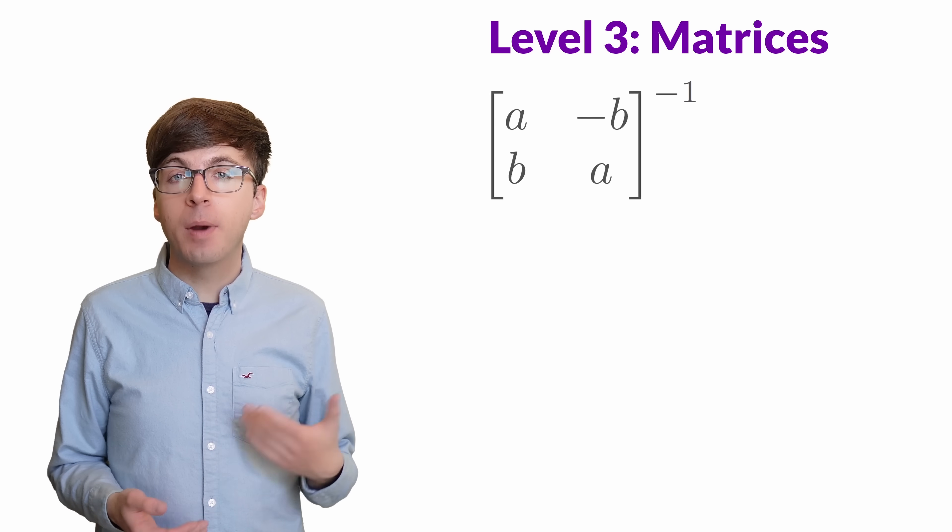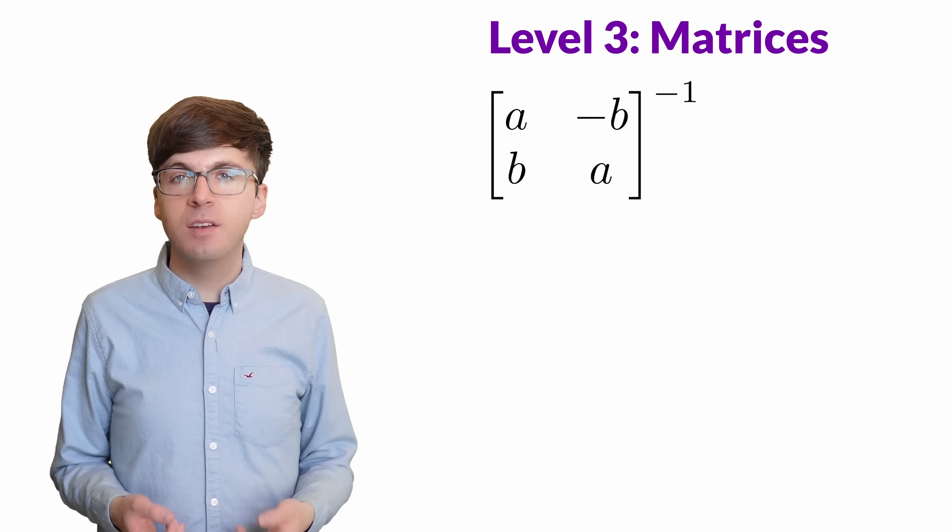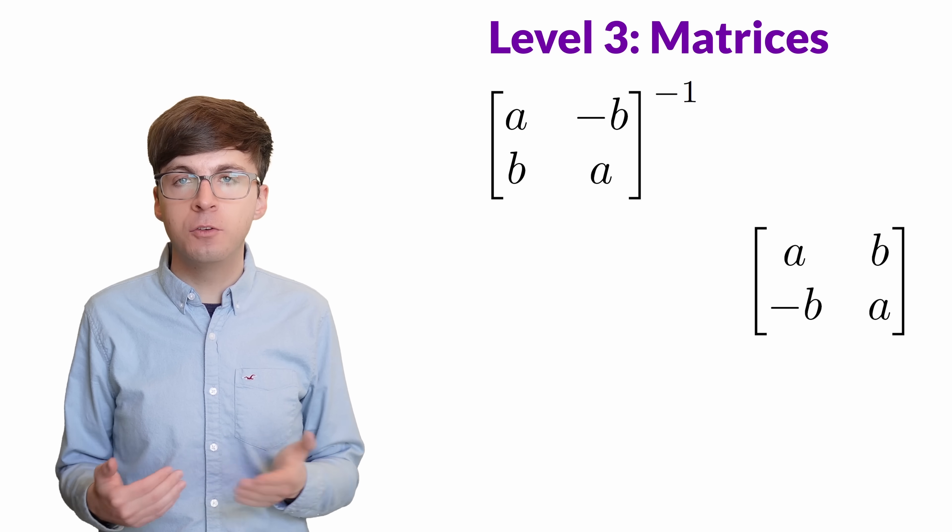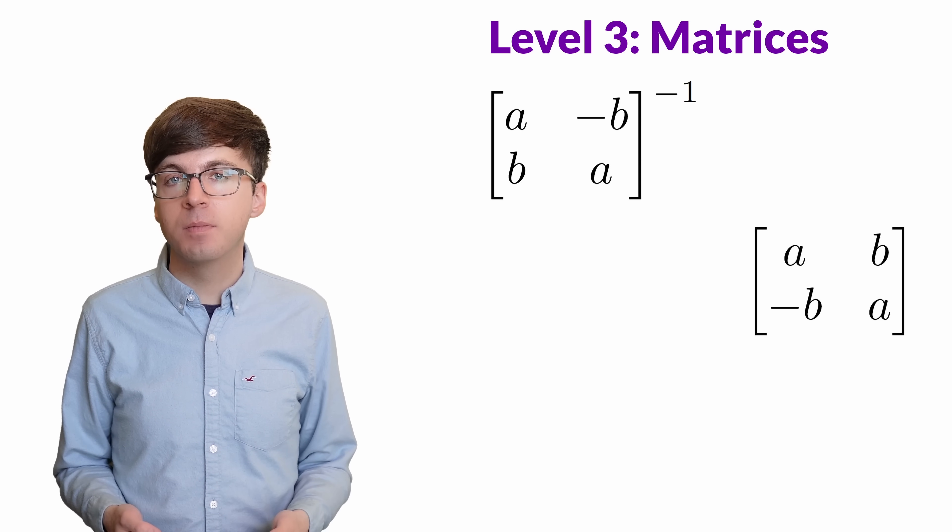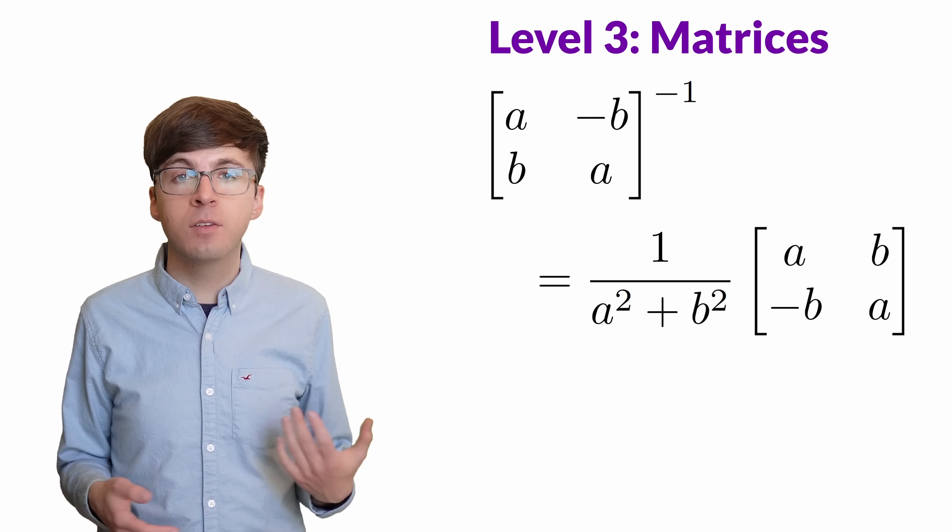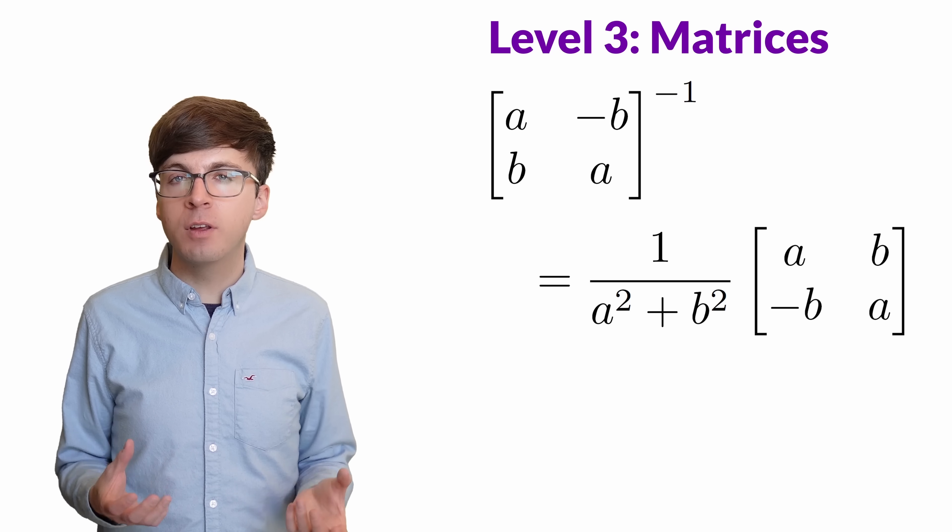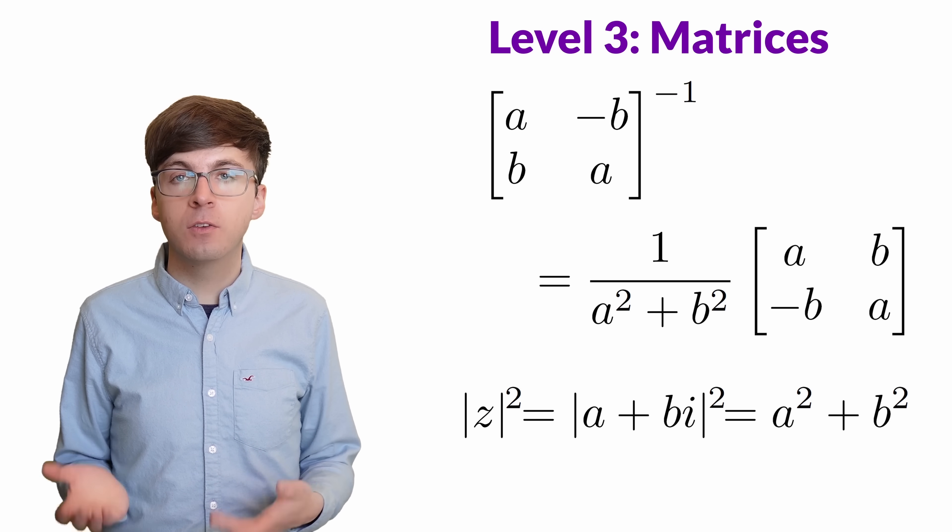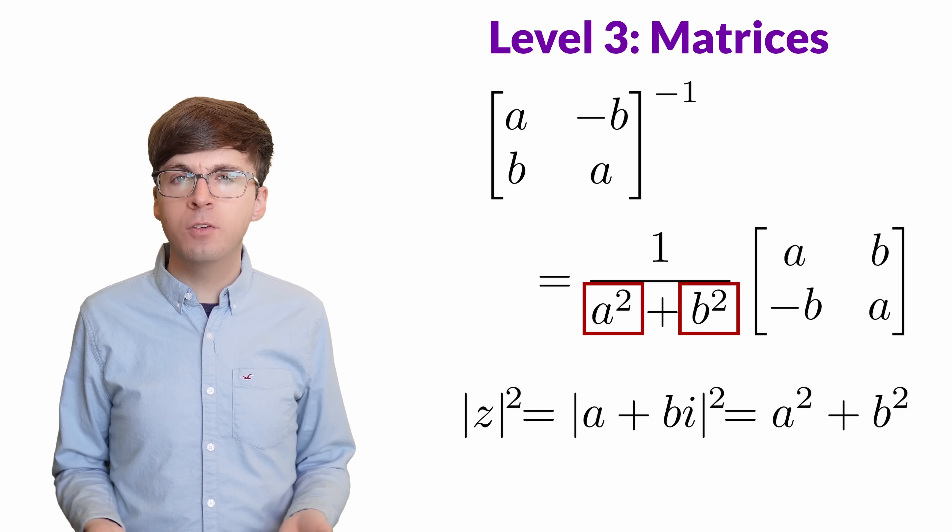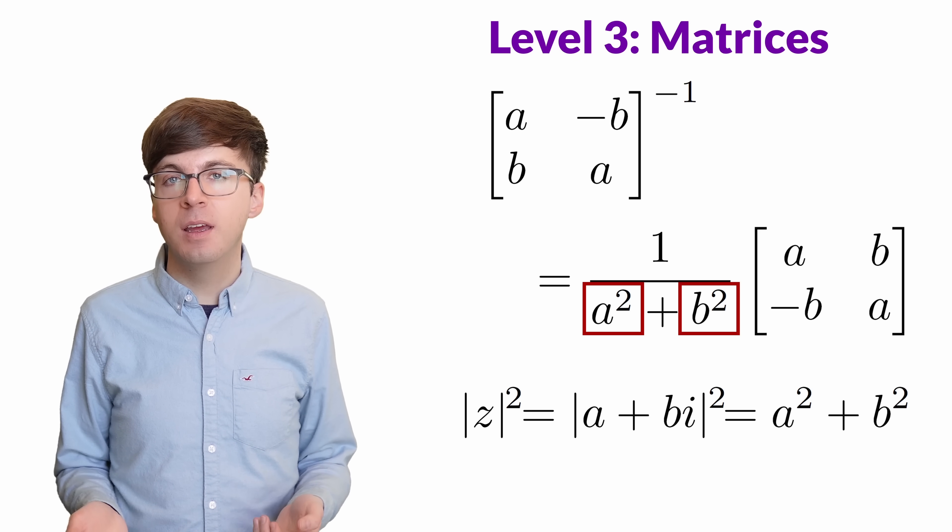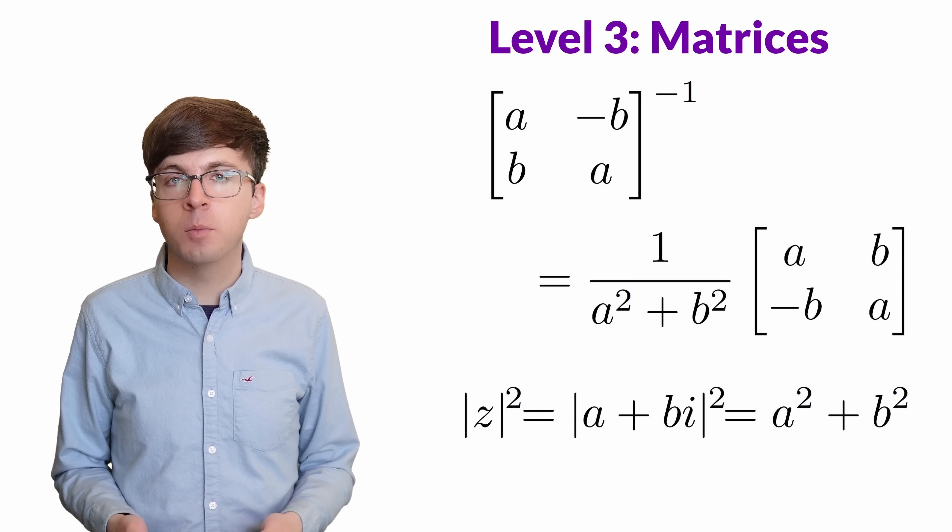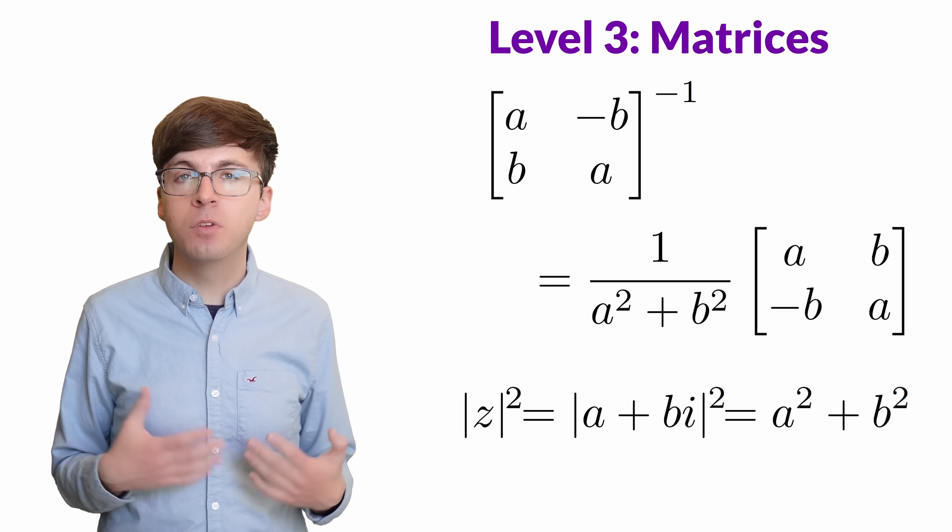We can also divide by a complex number by multiplying by its inverse matrix. Since these are 2 by 2 matrices, there's a particularly nice formula for the inverse. We swap the entries along the principal diagonal, that's the 2 a's, and then the other 2 entries gain a negative sign. Lastly, we need to divide by the determinant a times a minus negative b times b, which simplifies to a squared plus b squared. This determinant is what we usually write as the modulus of z, or the absolute value of z, squared. Since a and b are real numbers, a squared and b squared are greater than or equal to 0. So the only way the determinant is 0 is if a and b both equal 0. In other words, if the complex number is exactly 0. So we can't divide by 0, which we know from the real numbers, but we can divide by any other complex number by multiplying by its inverse matrix.